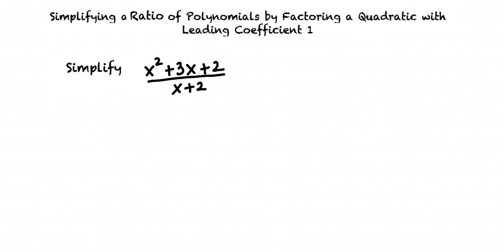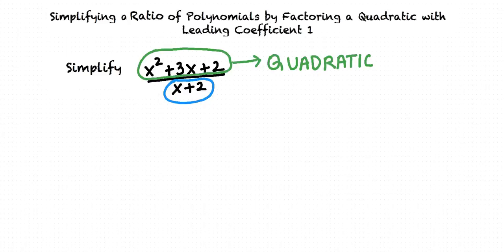Let's say we are required to simplify the expression x² plus 3x plus 2 over x plus 2. As we can see, the degree of the polynomial in the denominator is 1 and cannot be simplified further. But the numerator is a quadratic expression which can be factorized.